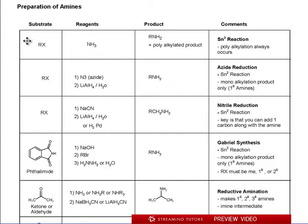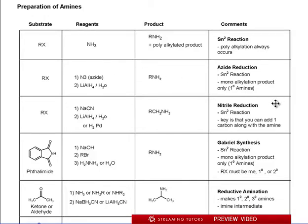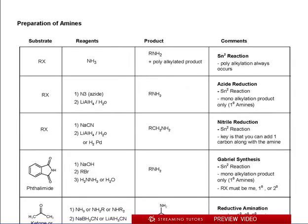Here's how the summary sheet works: if you have an alkyl halide and you react it with something — whether it be ammonia, N3, NaCN, and so on — it tells you what the product is going to be and also gives you special instructions about that reaction. I'm going to go through this one at a time over the next several pages, digging into the details. At the end, this review sheet will trigger your memory for everything else you need to know. Make sure you print this out before you continue.